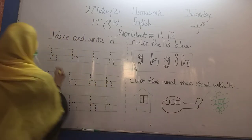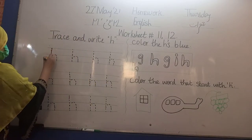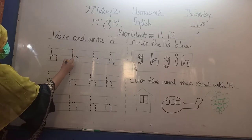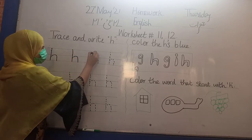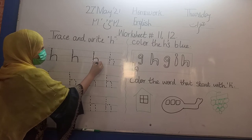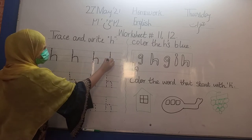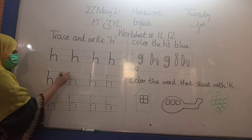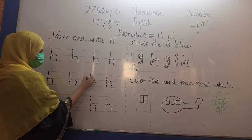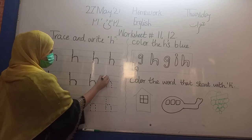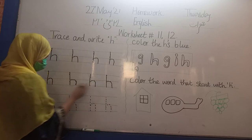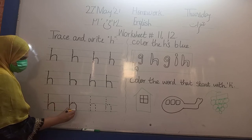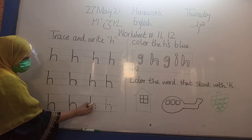Trace and write A. Start on this door, make a standing line, then make a loop. Step up. Remember, try to write the letter H.